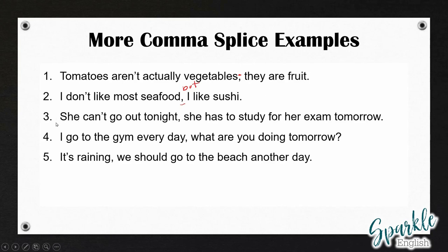Let's look at number three: 'She can't go out tonight, she has to study for her exam tomorrow.' In this case, I'm going to add a semicolon. You could also just make this into two separate sentences. Number four: 'I go to the gym every day, what are you doing tomorrow?' These are two independent clauses but they're not really connected, so I'm going to change the comma to a period and capitalize 'What' to make two separate sentences.